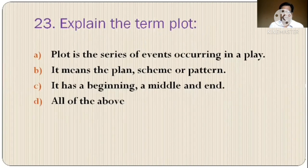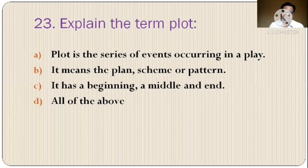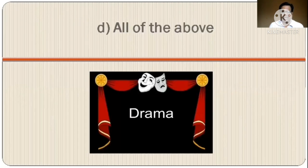Question 23: Explain the term plot. The options are: A) plot is the series of events occurring in a play, B) it means the plan, scheme or pattern, C) it has a beginning, a middle and an end, D) all of the above. The correct option is option D, all of the above.